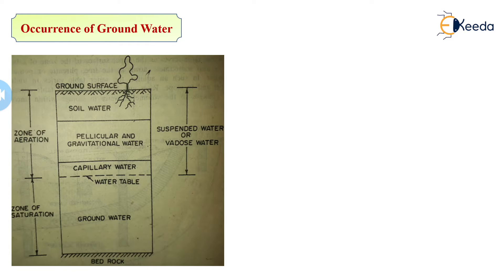The part of water which flows under the action of gravity flows directly downward and meets the groundwater level. This water is known as groundwater. According to groundwater philosophy, these zones are divided into two main zones.